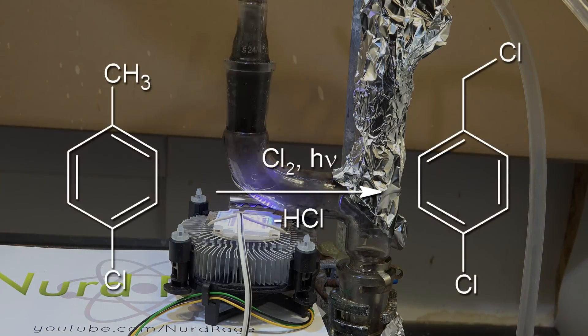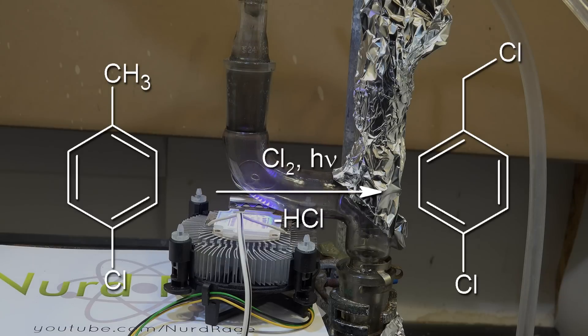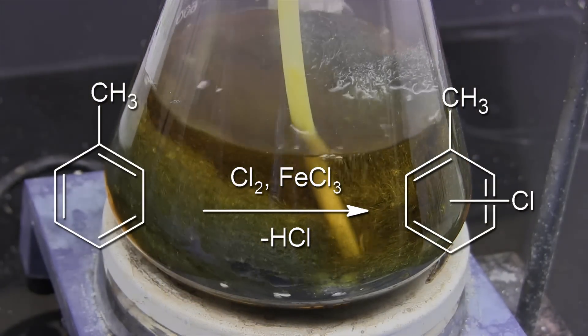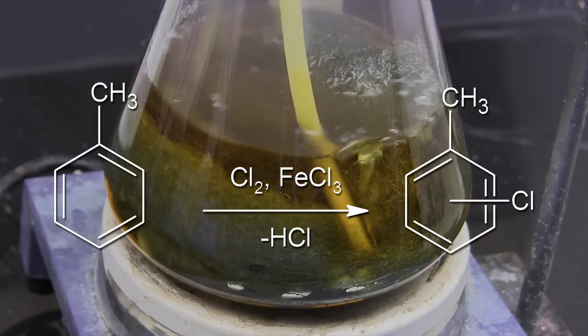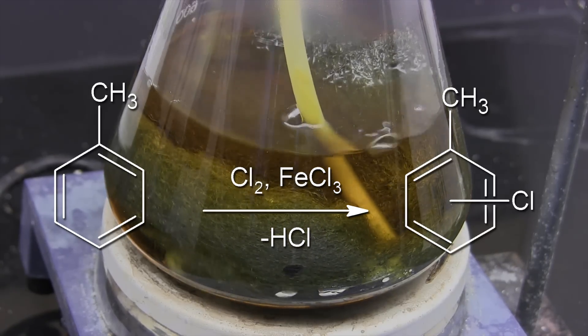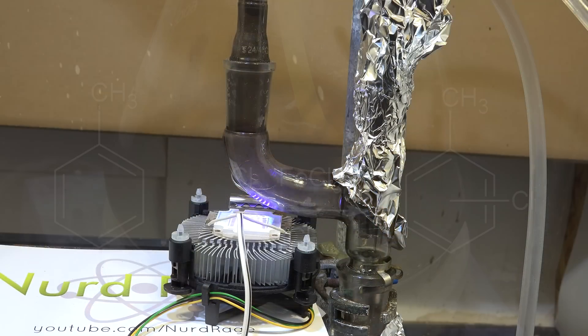What's interesting about this reaction is that it only chlorinates the methyl group, not the ring. In contrast when we were making chlorotoluene we also used chlorine gas but by using an iron chloride catalyst rather than UV light we chlorinated just the ring. This demonstrates the importance of selecting the right reaction conditions to influence the mechanism you want.